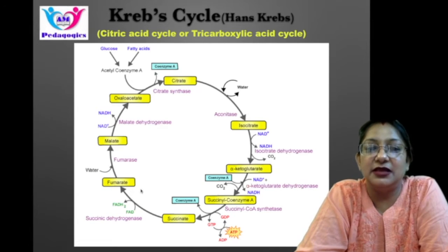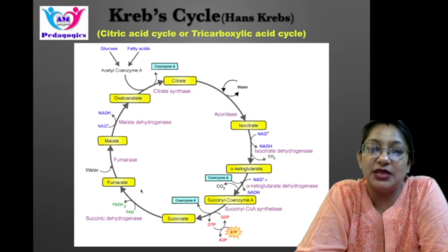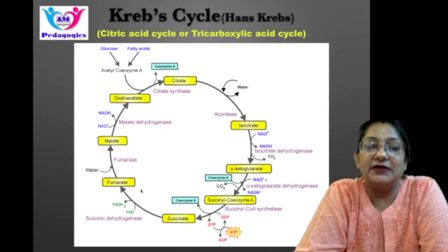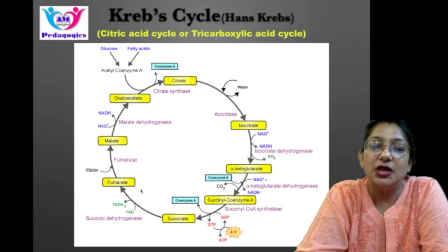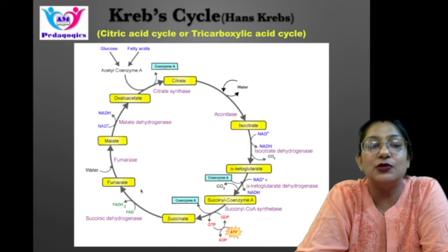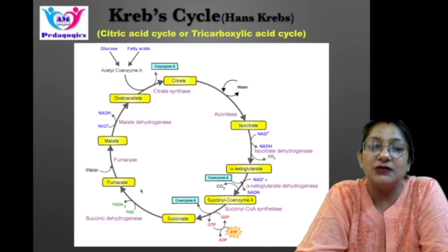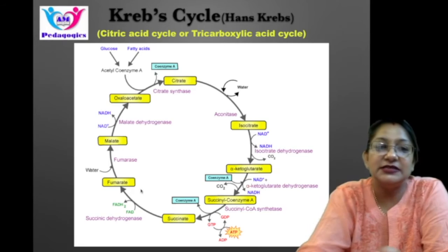Now we are particularly talking about the Krebs cycle. This process has eight steps, which occur in the mitochondrial matrix under aerobic conditions — that is, in the presence of oxygen. In the first step, there is condensation of acetyl coenzyme A with the 4-carbon compound oxaloacetate to form 6-carbon citrate.